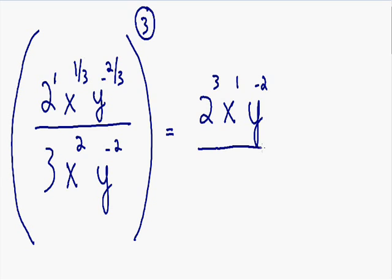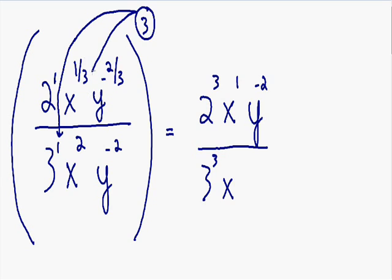Now we need to do the same thing with all of our terms in the denominator. Starting with the 3: the outside exponent multiplied by the exponent on top of the 3 — assume it is 1 — so 1 times 3 equals 3. For the x term, we multiply the outside exponent by the exponent on the x: 2 multiplied by 3 equals 6. For the y term, the exponent on y is negative 2 multiplied by 3, giving negative 6.